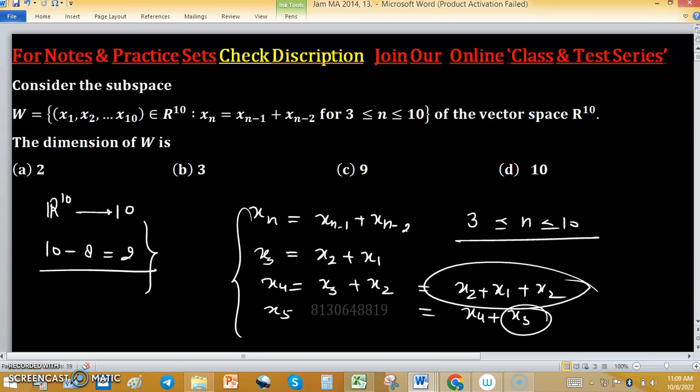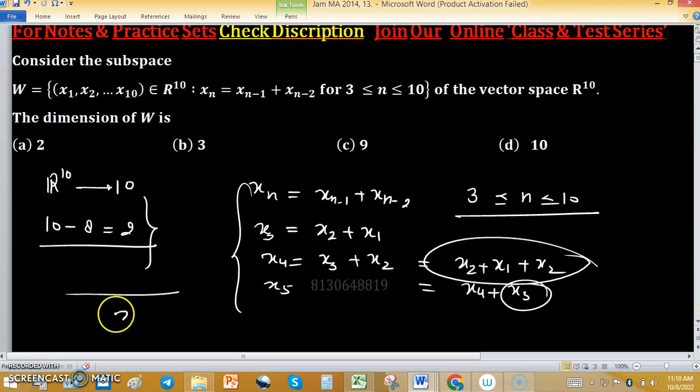If we have the tuple (x_1, x_2, ..., x_10), x_1 is at its place, x_2 is at its place, x_3 is the sum of x_1 + x_2, and all others are also combinations of x_1 and x_2.